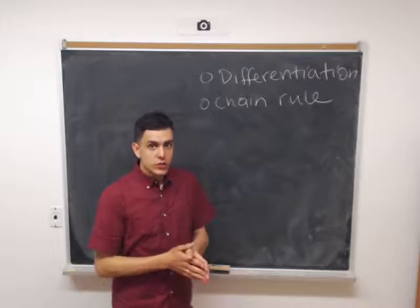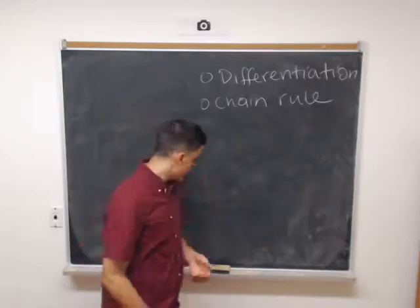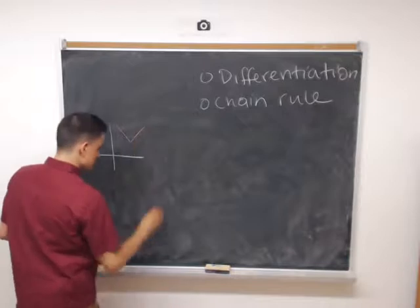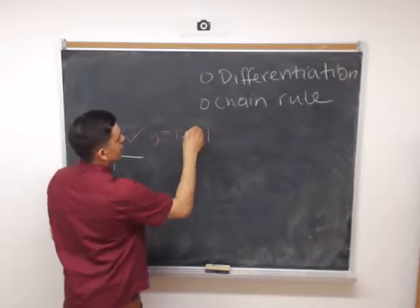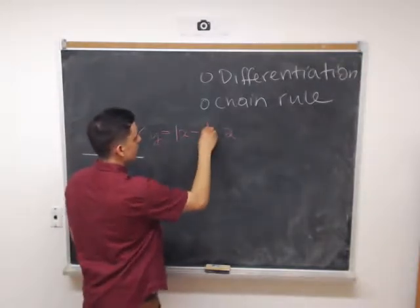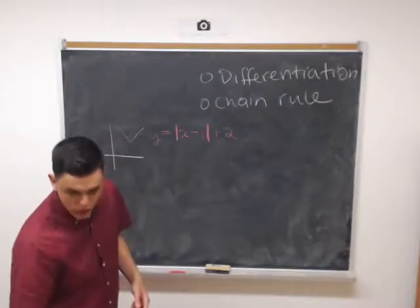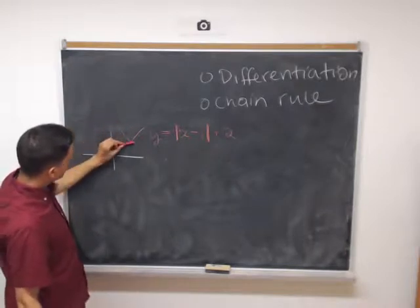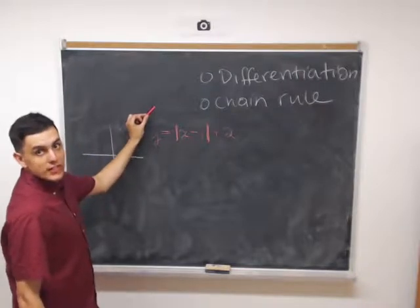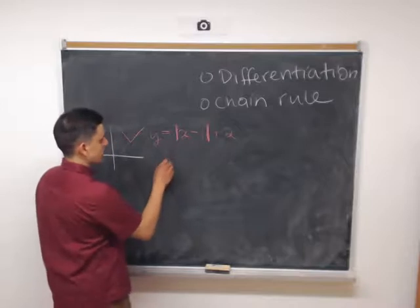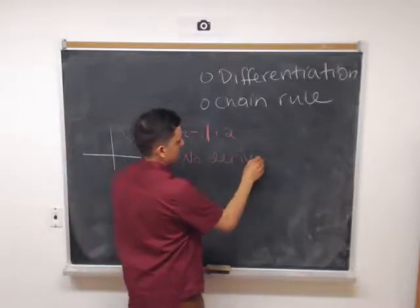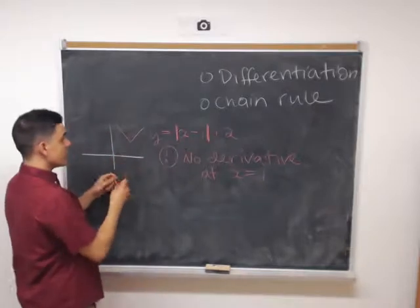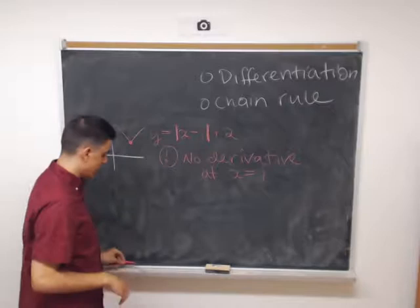So there's the topic of differentiation, which brings us into questions like, when does a function have a derivative? In one variable, we have the following phenomenon. So if we had something like y equals absolute value of x minus 1 plus 2, then this function would fail to have a derivative at x equals 1. So we'd be going along, there'd be no well-defined tangent line. We'd be going along, there'd be a well-defined tangent line. So no derivative at x equals 1, because at that point, there's no well-defined tangent line.